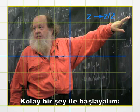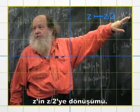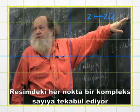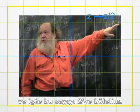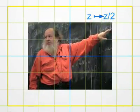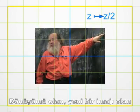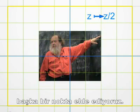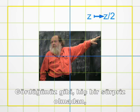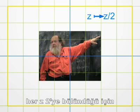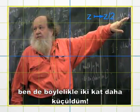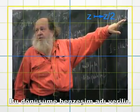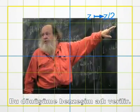Let's begin with something simple. The transformation Z goes to Z over 2. Each point on the photo corresponds to a complex number Z that's divided by 2. We get another point — its image by the transformation, hence a new picture. No surprise: I just shrank to half the size, since each Z has been divided by 2. This transformation is called a homothety.